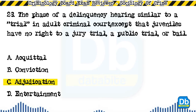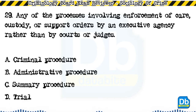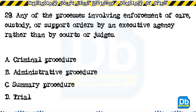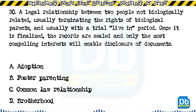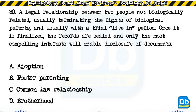The answer is C, adjudication. Question 29: Any of the processes involving enforcement of care, custody, or support orders by an executive agency rather than by courts or judges: a) criminal procedure, b) administrative procedure, c) summary procedure, d) trial. The answer is B, administrative procedure. Question 30: Illegal relationship between two people not biologically related, usually terminating the rights of biological parents and usually with a trial live-in period; once finalized, the records are sealed: a) adoption, b) foster parenting, c) common law relationship, d) brotherhood.